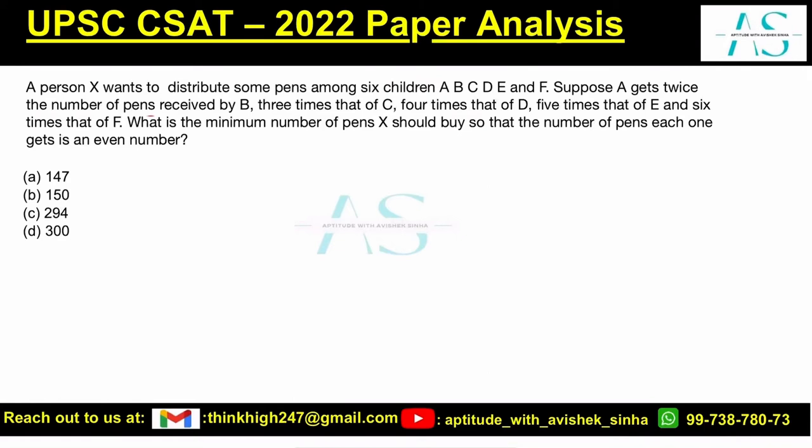A person X wants to distribute some pens among six children A, B, C, D, E, and F. Suppose A gets twice the number received by B, three times that of C, four times that of D, five times that of E, and six times that of F.